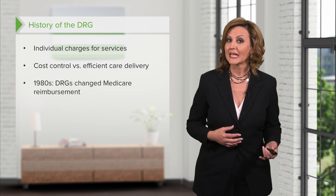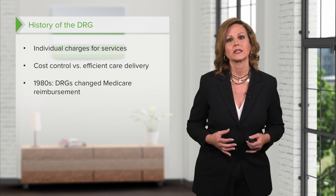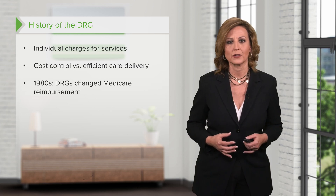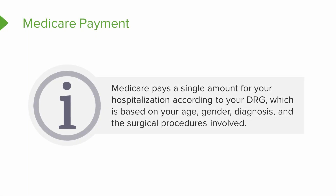Starting in the 1980s, DRGs changed how Medicare pays hospitals. Now, Medicare pays a single amount for your hospitalization according to your DRG, which is based on your age, gender, diagnosis, and the surgical procedures involved.